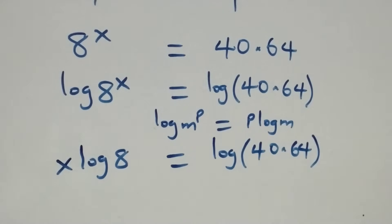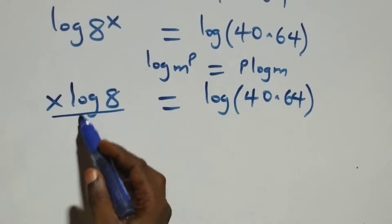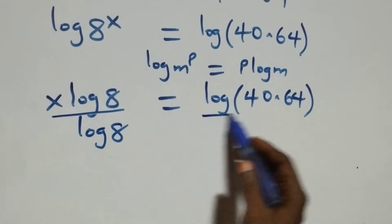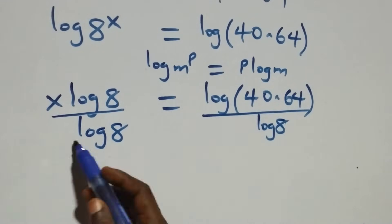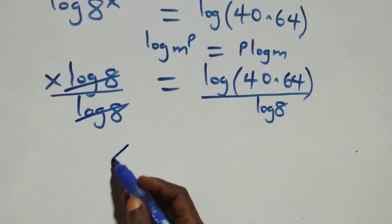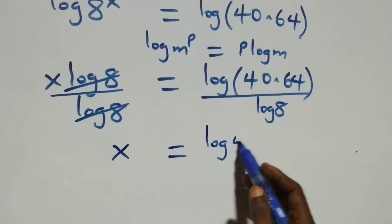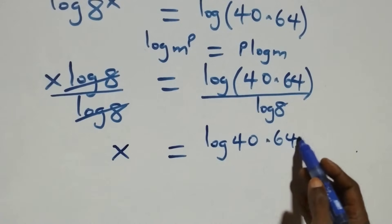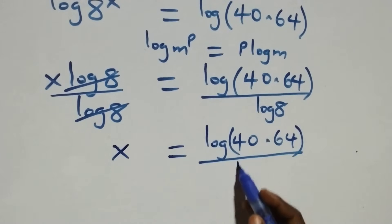Then we divide both sides by log 8. Log 8 cancels on the left side, leaving x equals log of 40 times 64 over log 8.